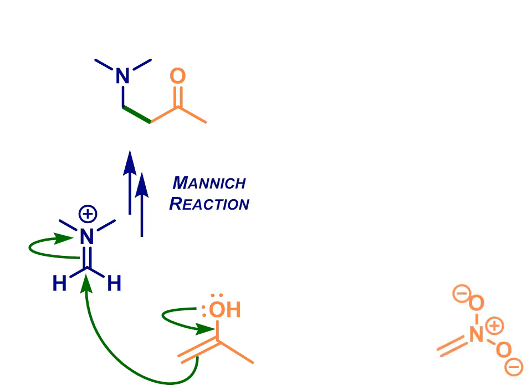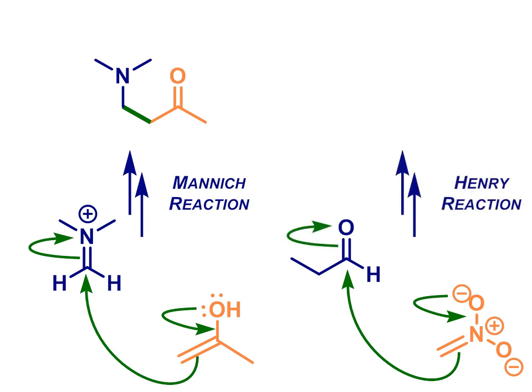Or it's possible to deprotonate alpha to a nitro group and give something that looks very much like an enolate anion if you use your imagination. This can then attack a carbonyl electrophile in a reaction that looks a lot like the aldol again. In this context we call it the Henry reaction and the product looks like this.